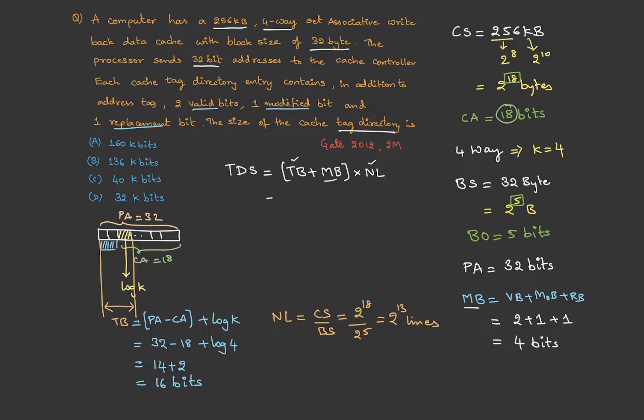So, let's substitute. This is equal to tag bits. We have 16. Meta bits, we have 4. And the number of lines, it is 2 power 13. So, this is 20 into 2 power 13. I can write it as 2 power 3 into 2 power 10. The reason to write it as 2 power 10 is, the answer has kilo. So, this could be written as 20 into 8 and this is k. So, this is 20 into 8, 160 k. These are basically bits.